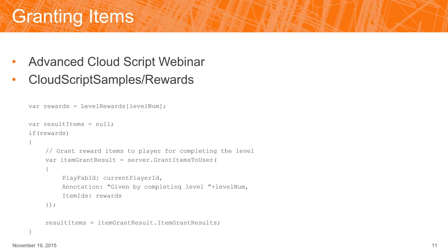The other thing you can do in addition to selling items is grant them. In our CloudScript samples, in the rewards sample, we show you how to do grants of items to users — set up so that when the player completes a level, we had level rewards defined in CloudScript. I'd say it's best to define rewards in title data if possible so you can make adjustments more easily on the fly. You'd only want to do grants through server-based operations to ensure players can't get items they don't pay for.